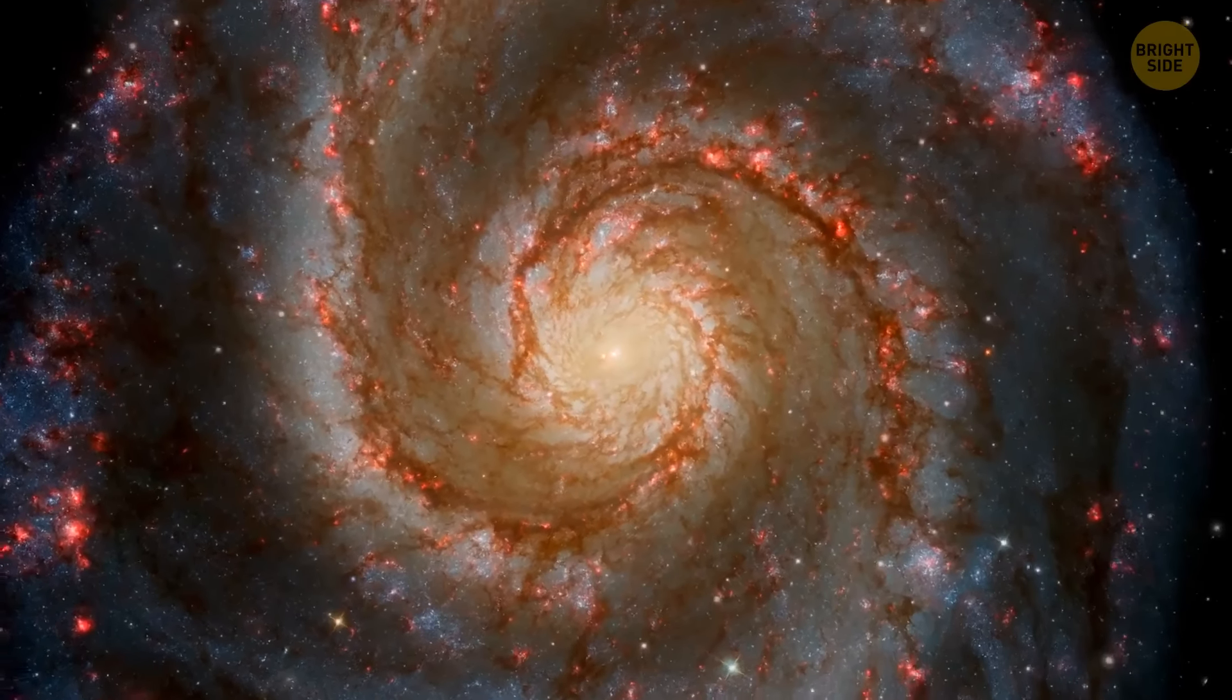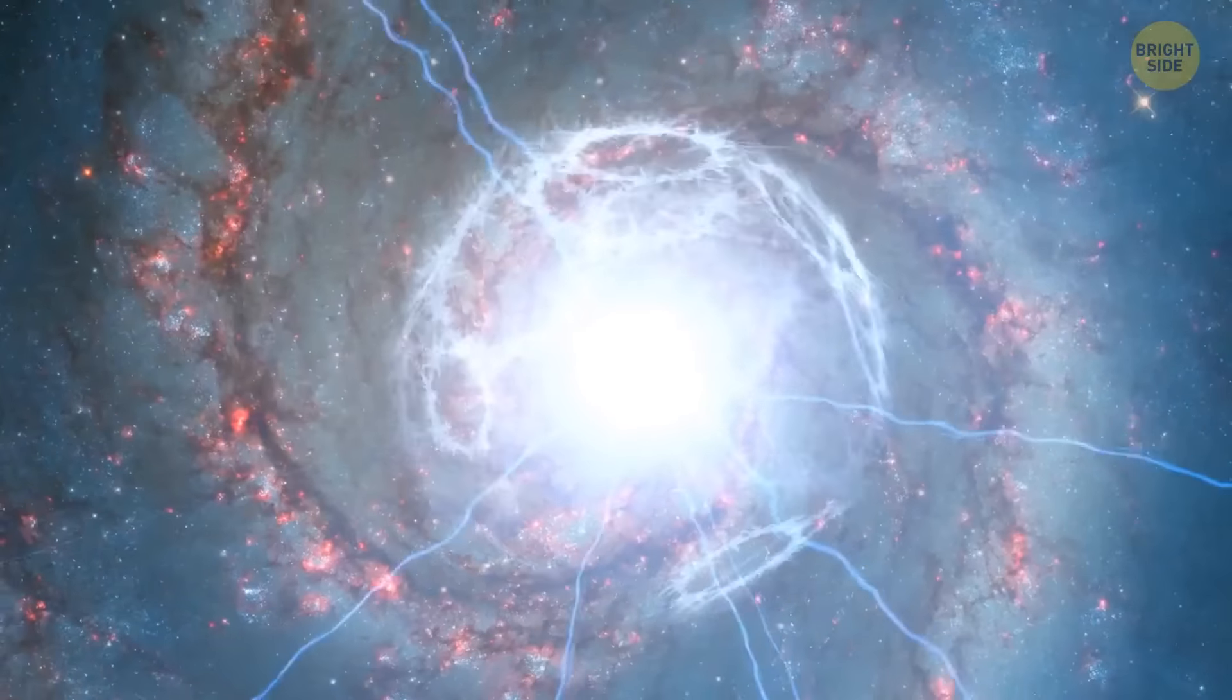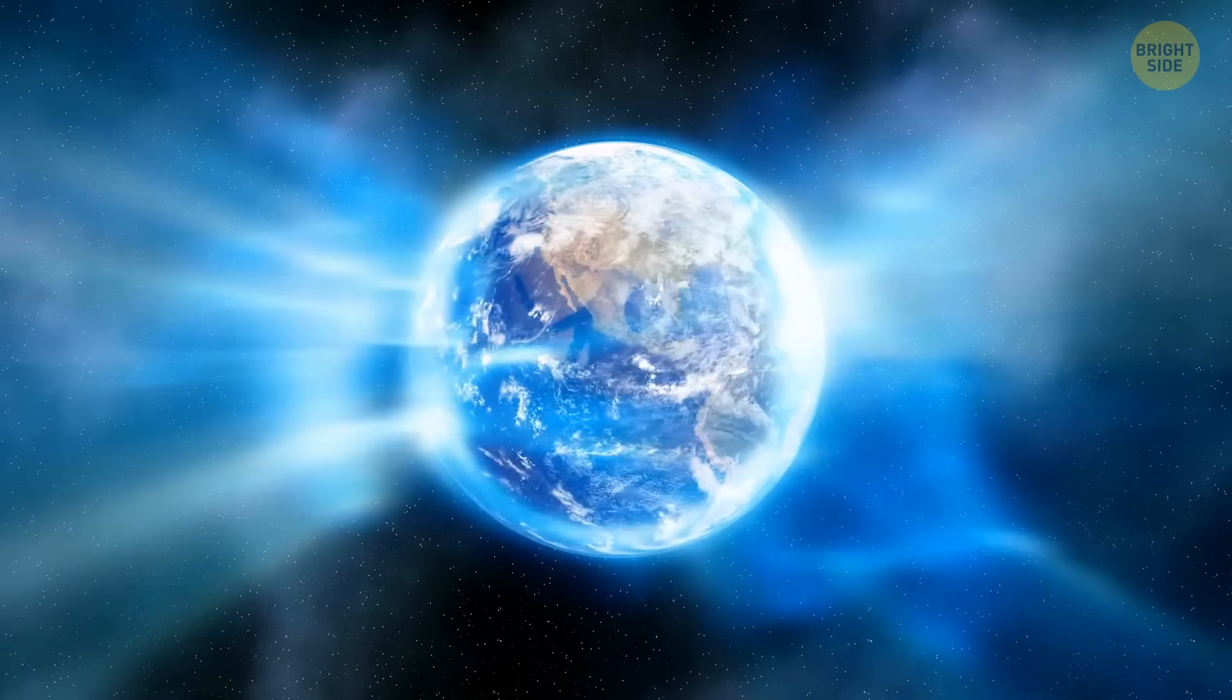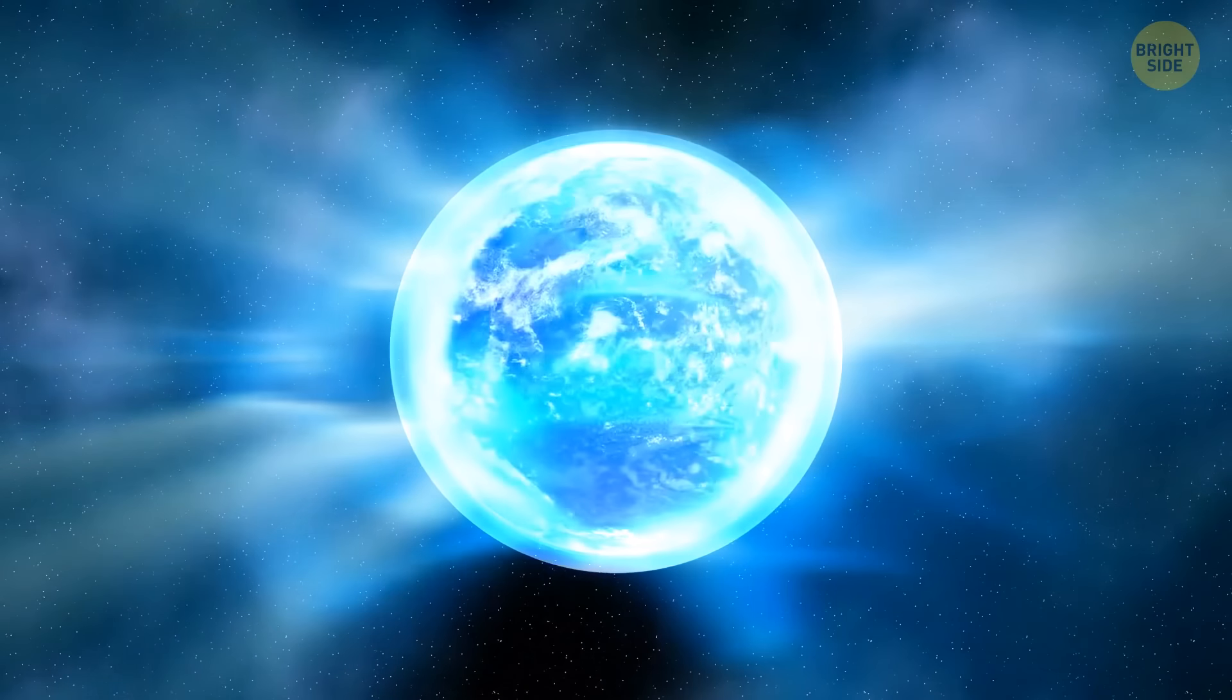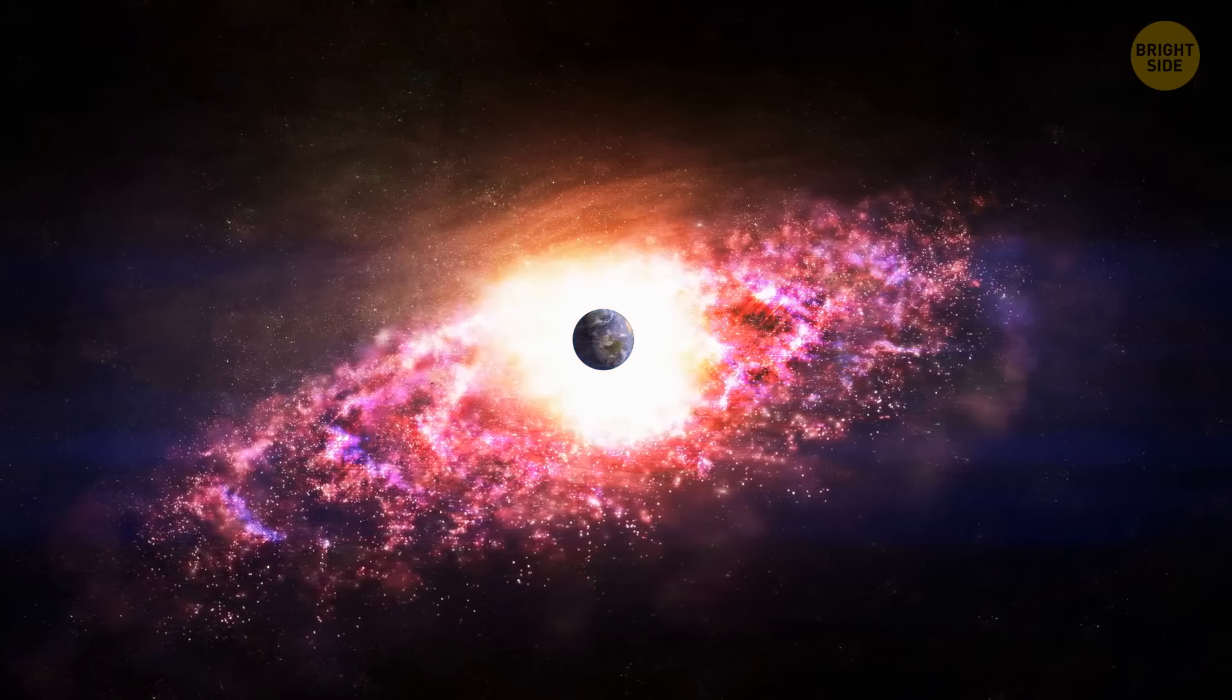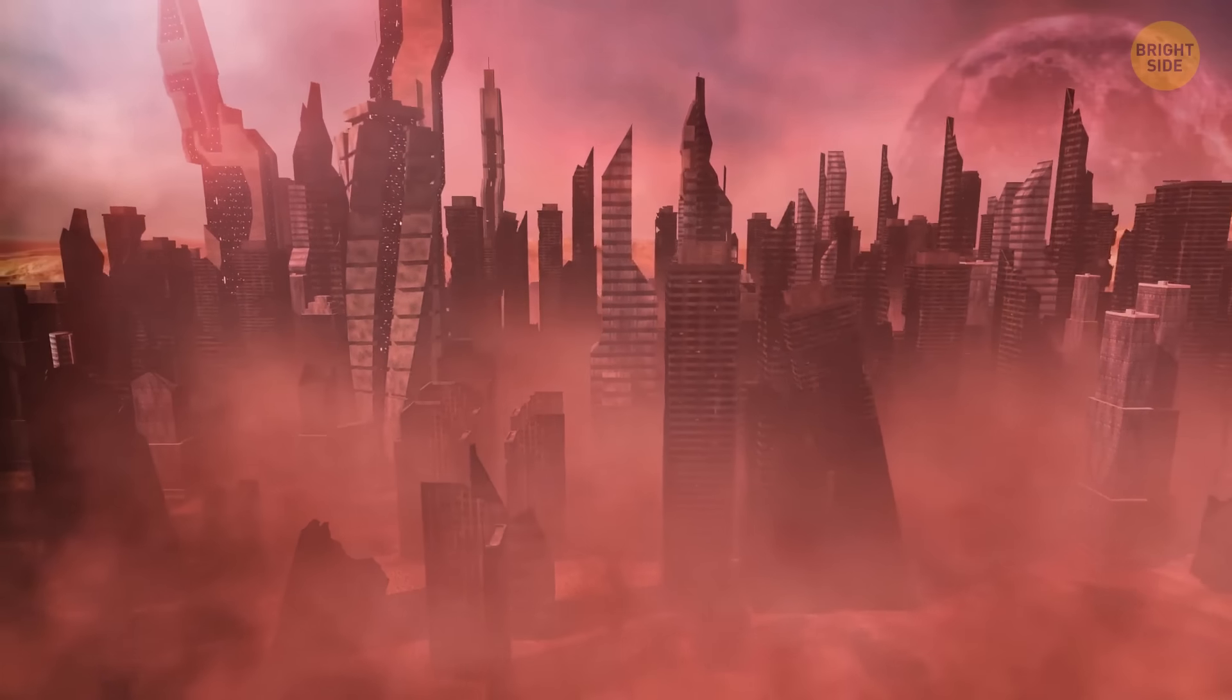So if the Earth were located somewhere closer to the center of the Milky Way galaxy, it would be a very different place. First of all, radiation. As we mentioned earlier, the center of the Milky Way is one of the most radiation-dense regions in the galaxy. It would make life on Earth very challenging, if not impossible. Sure, we have the Earth's magnetic field. It's like a giant shield that protects us from harmful radiation from outer space. But could it protect us if we were located in the center of the Milky Way? Unfortunately, the answer is no. It's kind of like trying to use a tiny umbrella to protect yourself from a massive storm.